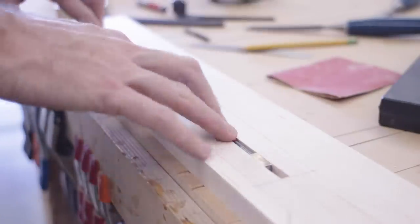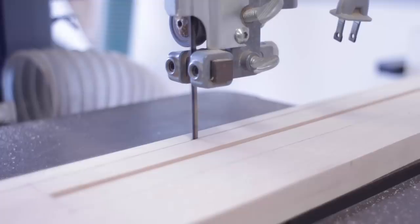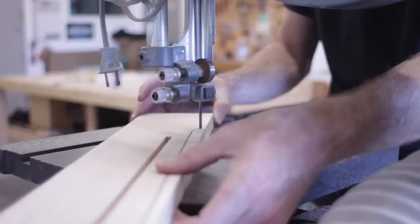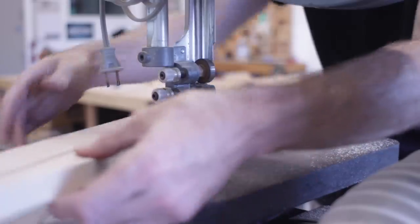With the truss rod in, I no longer needed my neck blank to be square and parallel. So I could first rough cut the neck shape, then get it to final dimension with my template and a flush trim bit.